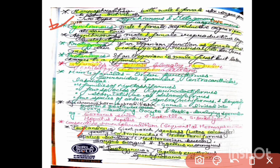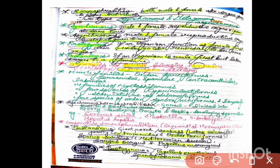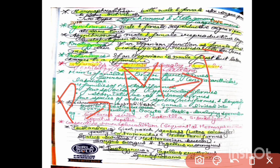Protogynous hermaphroditism is when an organism functions as female first and then undergoes sex reversal to become male — so protogynous means female first, then male. Protandrous hermaphroditism is when an organism is male first and then changes to female — so protandrous means male first, then female.